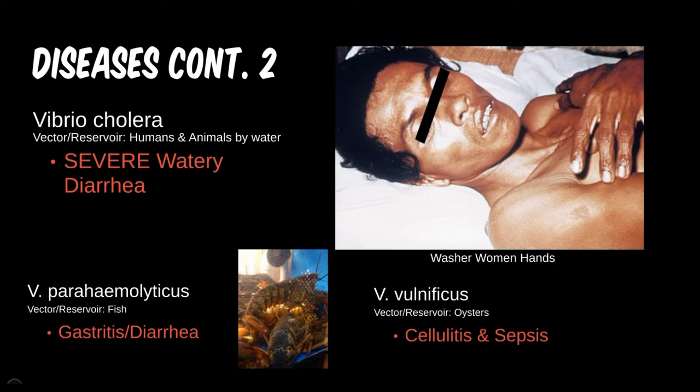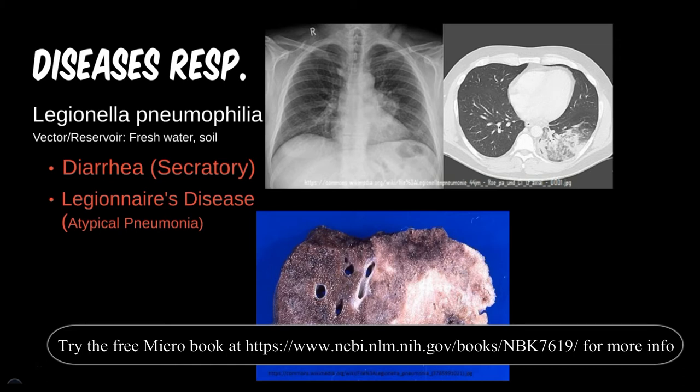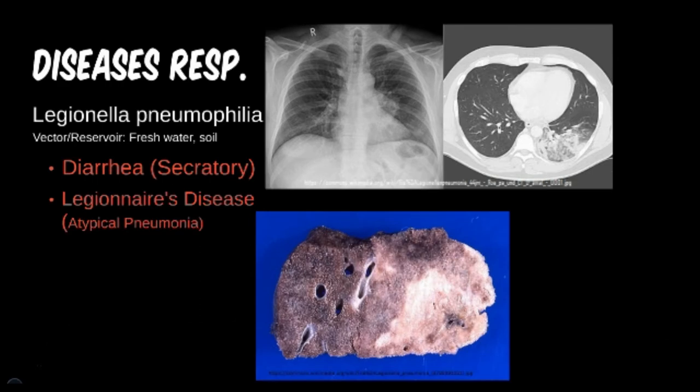For our first respiratory rod, we have Legionella. In particular, the pneumophilia species is of medical relevance and can cause diseases related to the airway. Less intuitive is the secretory diarrhea that the pathogen can cause. Much more popular and more testable is Legionnaires' disease. This disease got its name from the historic Pennsylvania American Legion convention in the 70s, in which many of the attendees became sick with a mysterious illness. It likes to live in water reservoirs, such as air conditioning systems, which is where it seemed to be harbored during this convention.